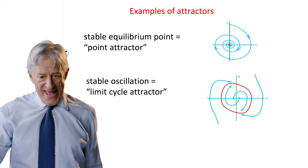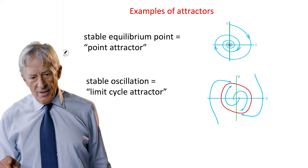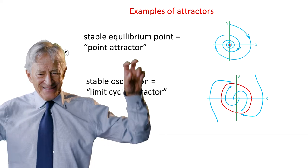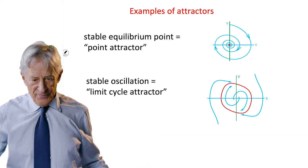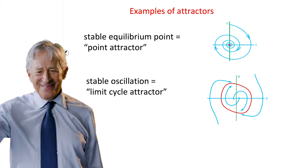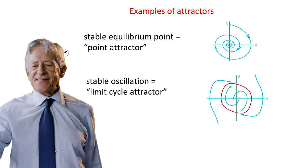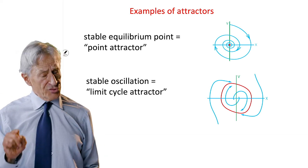Now, the set A is that red loop. And the red loop is called a limit cycle because in the limit, it's a cycle. And it's called a limit cycle attractor because it is an attractor.